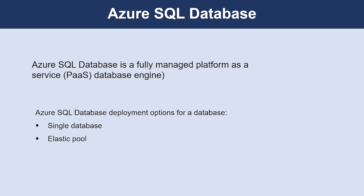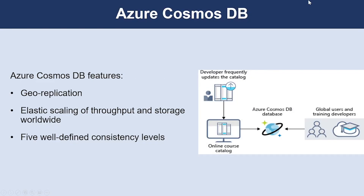A single database is similar to a contained database in the SQL Server database engine. An elastic pool is a collection of single databases with a shared set of resources such as CPU or memory, and a single database can be moved into and out of an elastic pool.